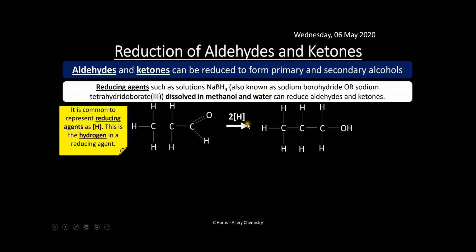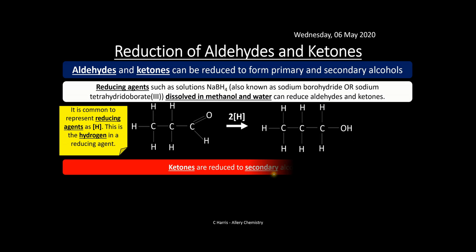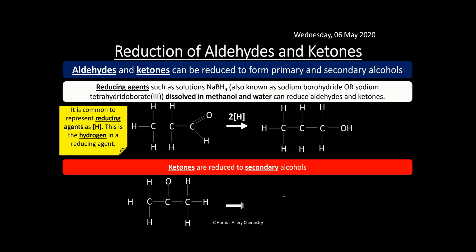For example, here we've got propanal as the aldehyde — we react it with our reducing agent and form an alcohol. We use 2[H] because we need two hydrogen atoms: one hydrogen attaches to the carbon and one attaches to the oxygen to make the alcohol. Ketones are reduced to secondary alcohols in exactly the same way — one hydrogen onto the oxygen and one onto the carbon.